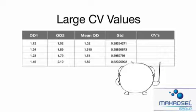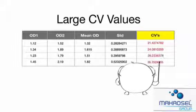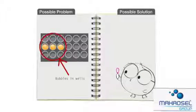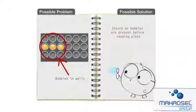Large CV values generally considered to be above 20% for our assays may be due to the following. Acquiring bubbles in the wells during the assay. Please ensure no bubbles are present in the wells before reading your plate.